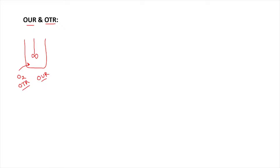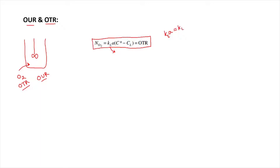These two are very important. The oxygen transfer rate — the rate at which you transfer oxygen to the culture vessel — is given as KLA into (C* minus CL), where KLA is actually a constant. KLA is a multiplication of two constants: KL and A. KL is the mass transfer coefficient, which has a dimension of length, and A is the interfacial area — the area at the liquid and gas interface.